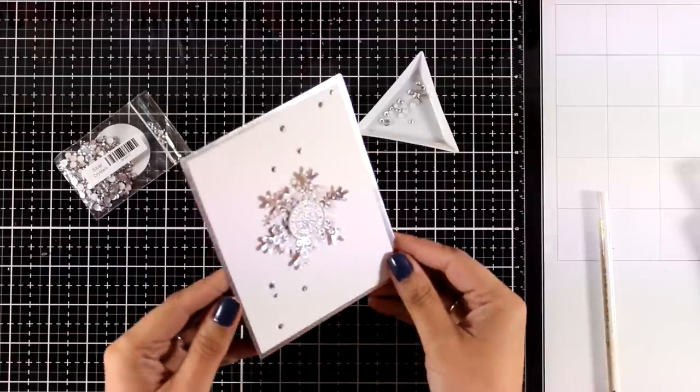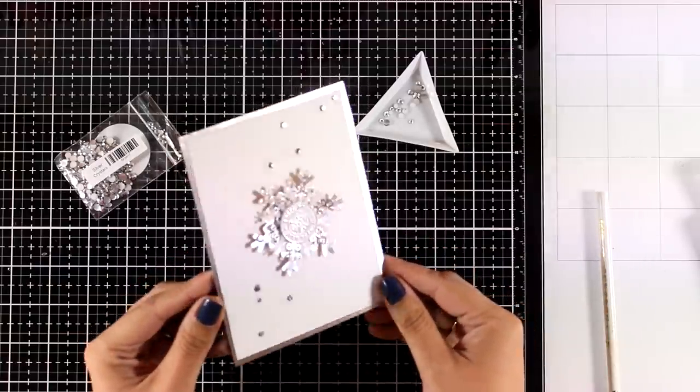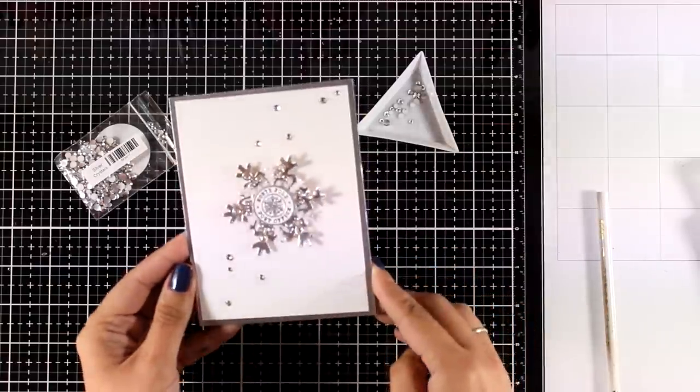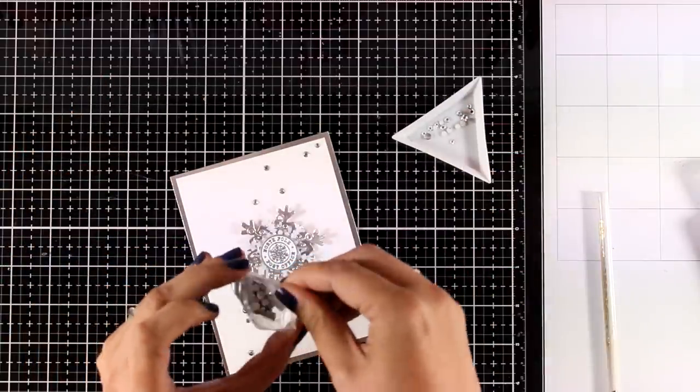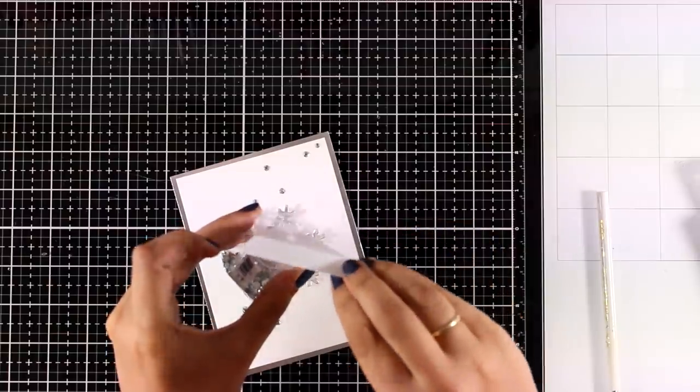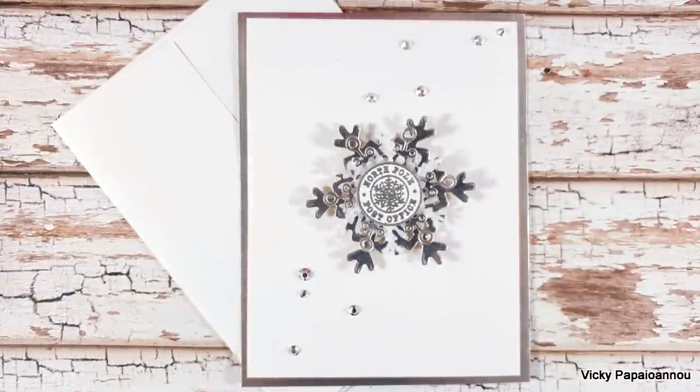And here is the finished card. Remember you can stamp with different colors all those little circles and if you have a snowflake die just stick those circles on top. You can create different color combos and lovely cards in minutes.